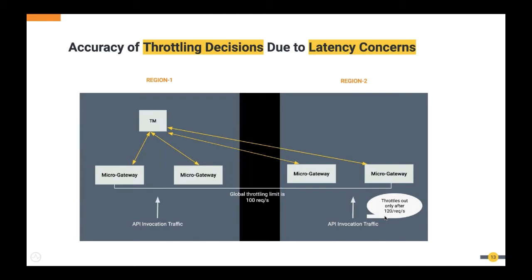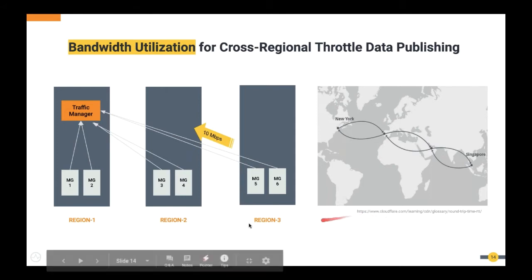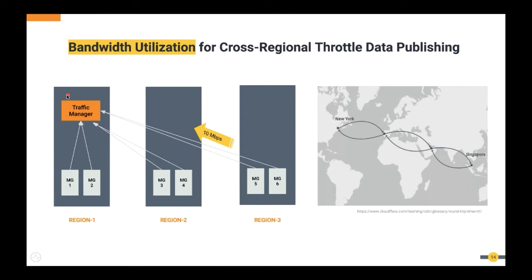The second concern is bandwidth utilization across regions. In a three-region deployment with only one traffic manager handling rate limiting, data must be published to that traffic manager from all other regions. Under higher load, an organization may need higher bandwidth to cater to this requirement, which also brings additional cost.